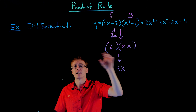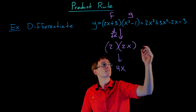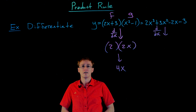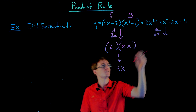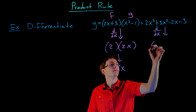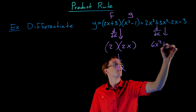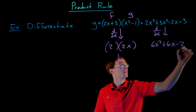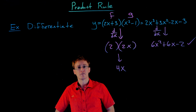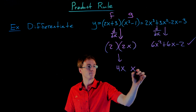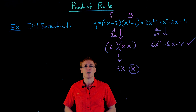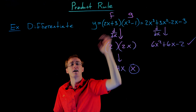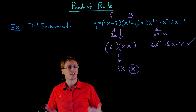If we look at the expanded form and differentiate that, we get something very different than 4x. Differentiating the expanded form gives us 6x squared plus 6x minus 2, and those are clearly not equal. So 6x squared plus 6x minus 2 is the correct derivative using what we've learned before, and 4x is definitely not right. The point is: you can't just take the derivative of each factor and multiply them together.